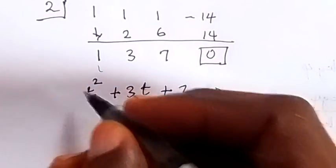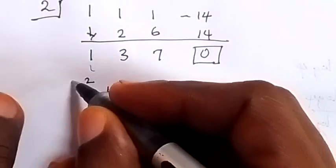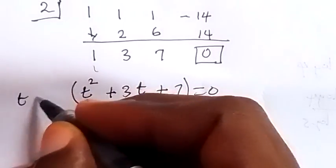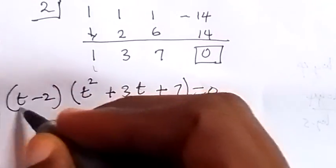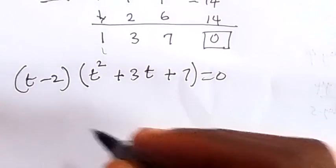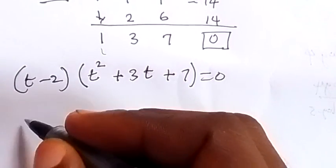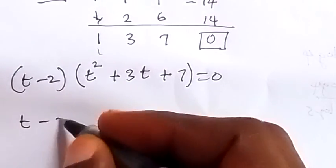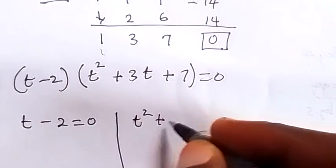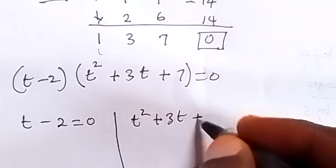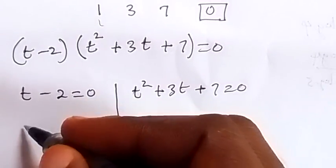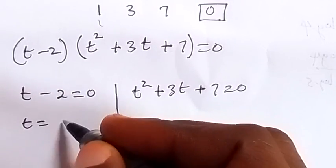The polynomial has been reduced to this quadratic times the factor t minus 2. From here we have two possible cases: t minus 2 equals 0, or t squared plus 3t plus 7 equals 0. From the first case, t equals 2.